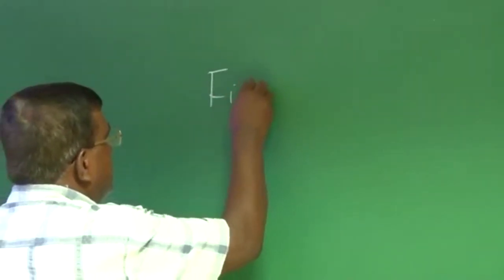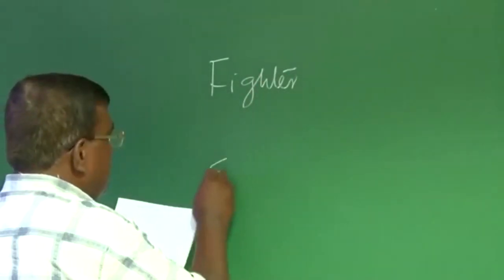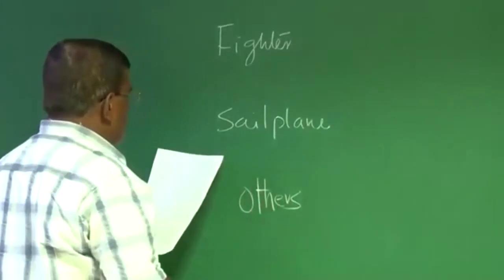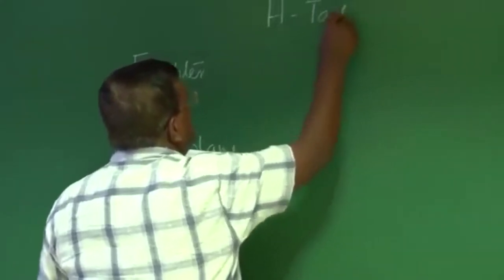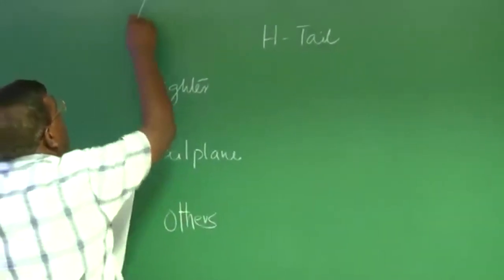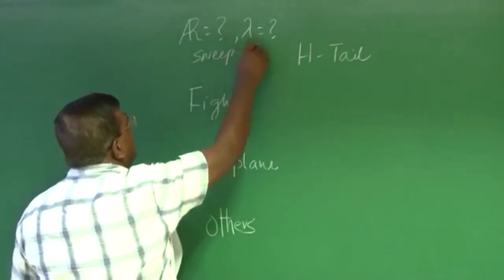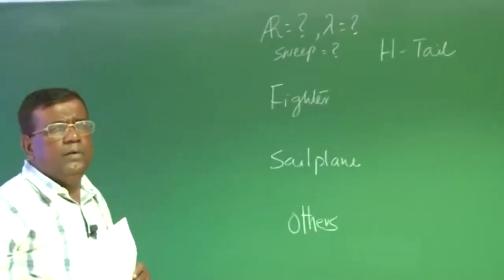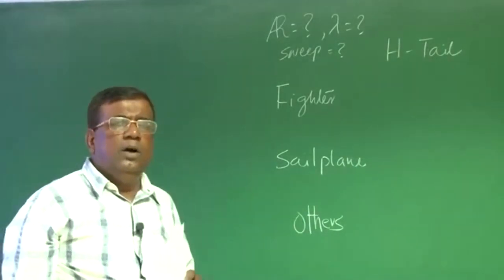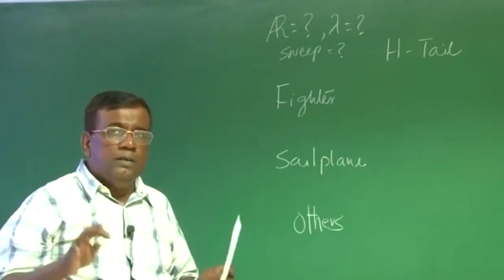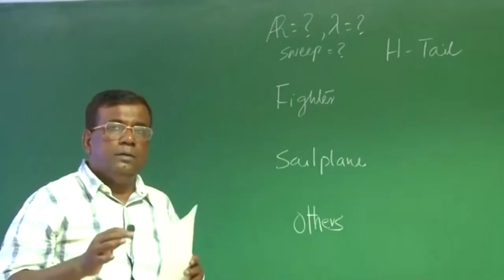To complete the horizontal tail and vertical tail discussion with some historical numbers, please note this. A chief designer need not understand every aspect of aircraft in detail, but he cannot have an excuse to not know the first-order effects. Otherwise, he would not be able to converge into a configuration.